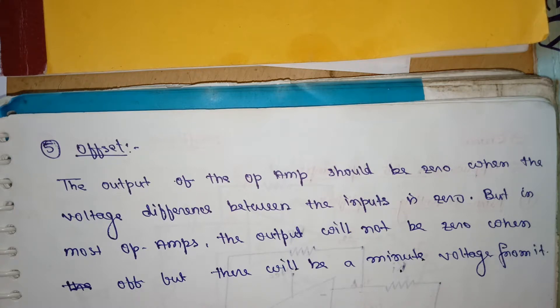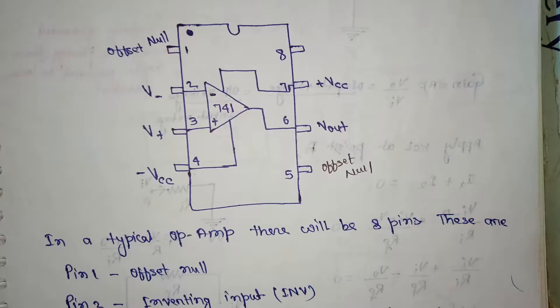The output of the op-amp should be zero when the voltage difference between the inputs is zero, but in most op-amps the output will not be zero but there will be a minute voltage from it. This is the basic diagram of the op-amp.